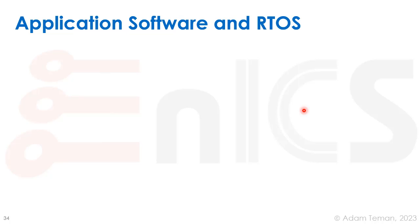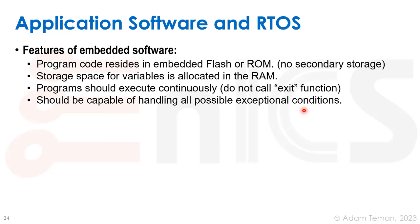With those as the main components of a system-on-chip, let's discuss application software and real-time operating systems. Features of embedded software: the program code often resides in embedded flash or read-only memory, not a hard disk as in a regular desktop system. Storage space for variables is allocated in RAM. Programs should execute continuously — there's a while-one loop that keeps running with no exit function. And the software should be capable of handling all possible exceptional conditions, such as using a watchdog timer to reset the system or kill a runaway process if something hangs.